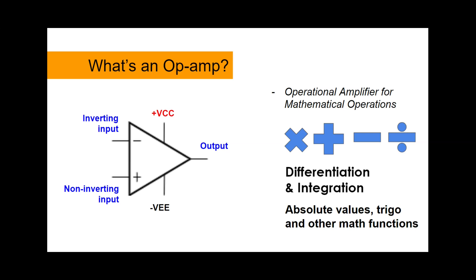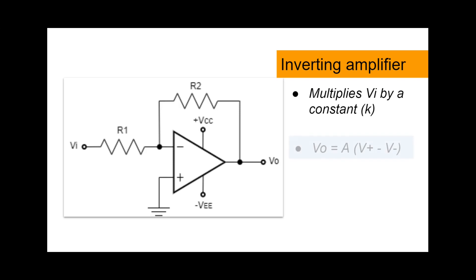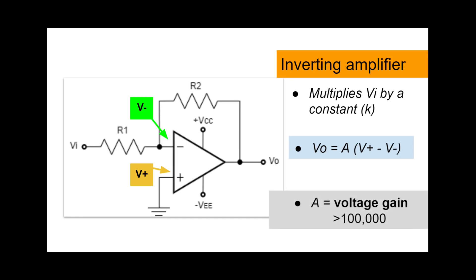For today, we'll design an inverter, which will multiply an input voltage by a negative constant K. To understand how this will operate, let's look into the behavior of an op-amp. The op-amp circuit works according to this formula, where V positive and V negative are indicated in the diagram. There is also capital A, which is known as the voltage gain, and is usually a very big number, for example, 100,000.